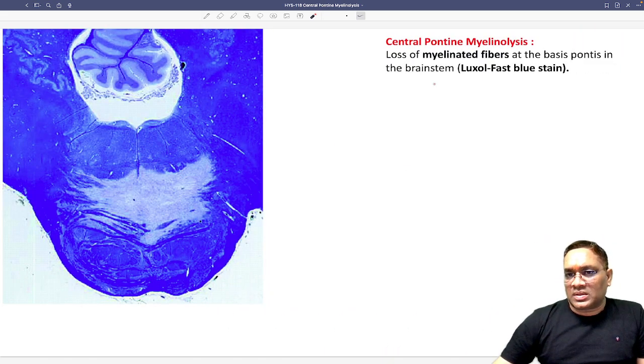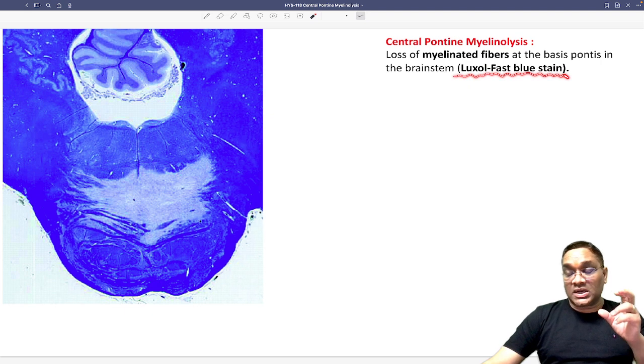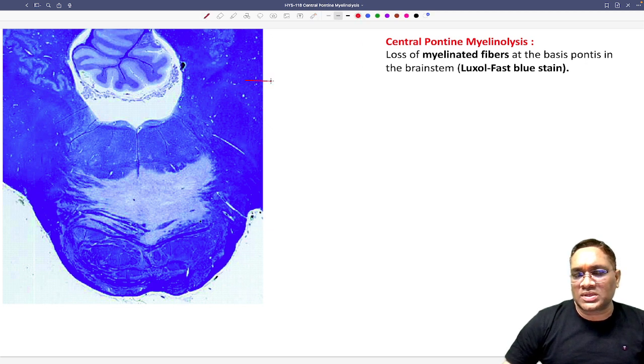And this is a picture of the special stain called Luxol Fast Blue Stain. This is the special stain for the neurons or myelin, basically for myelin sheath. So when you will see the myelin is present, normal area of the myelin will be looking blue in color. So this is the normal area of the myelin.